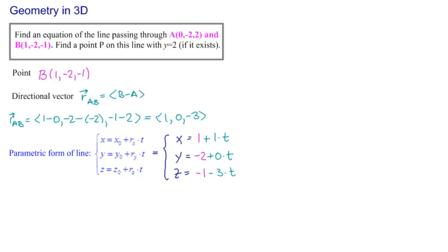So our answer is x equal to 1 plus t, y equal to minus 2. There's no t there. And z equal to minus 1 minus 3t. So here is an equation of the line passing through A and B.